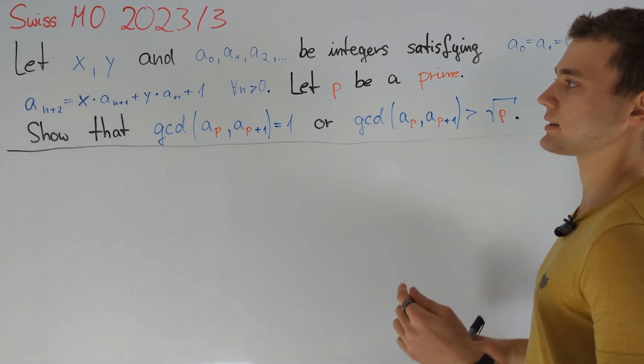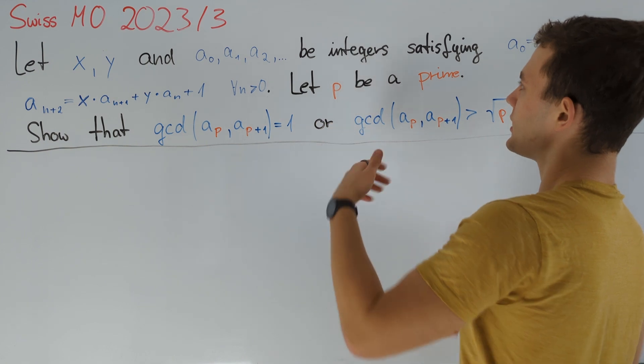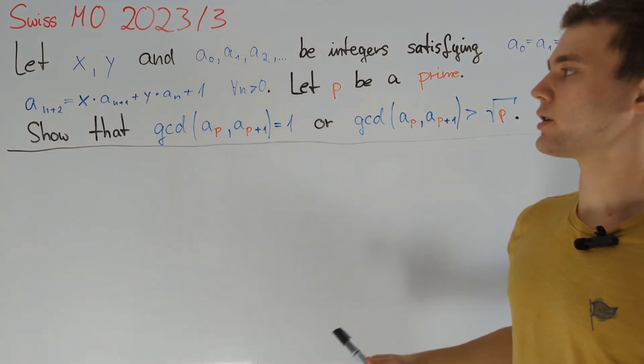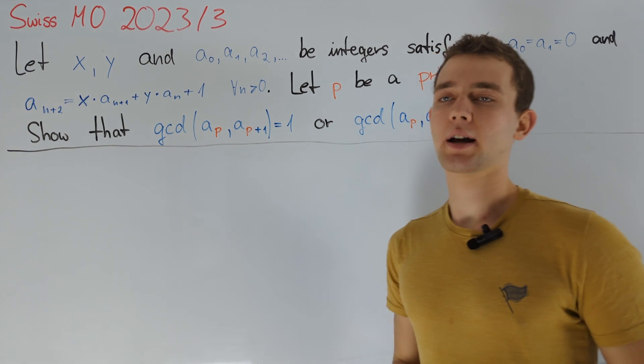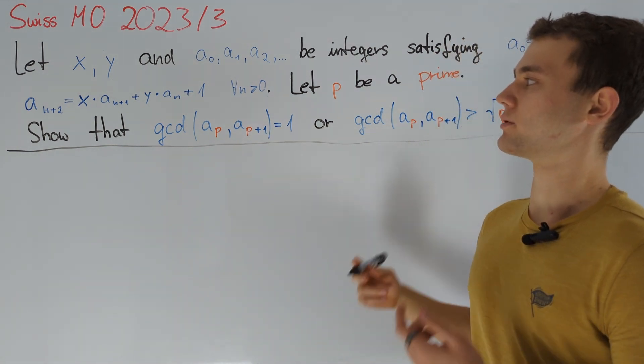The problem statement gives us x, y and a₀, a₁, a₂ and so on integers, such that a₀ and a₁ are equal to 0 and moreover the recursion aₙ₊₂ equals x·aₙ₊₁ plus y·aₙ holds for all n greater than or equal to 0.